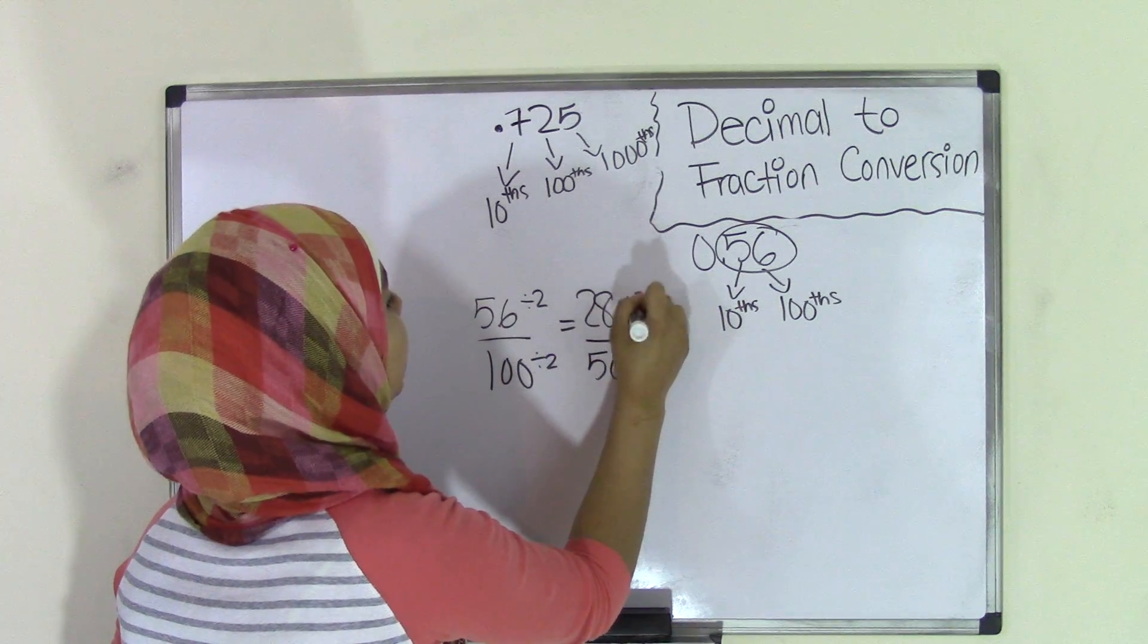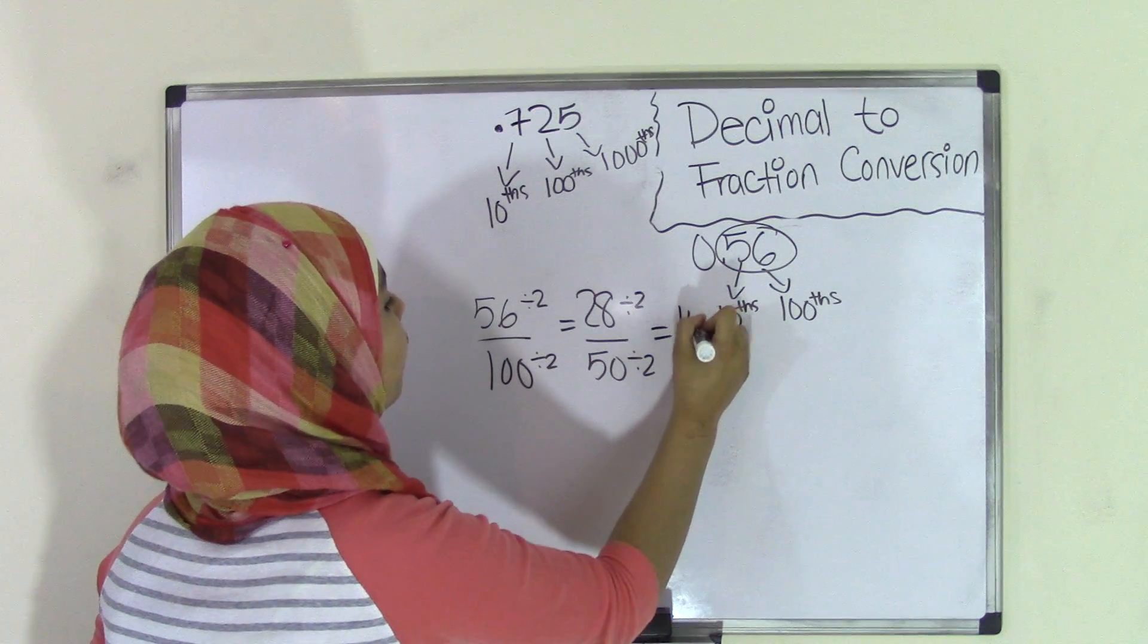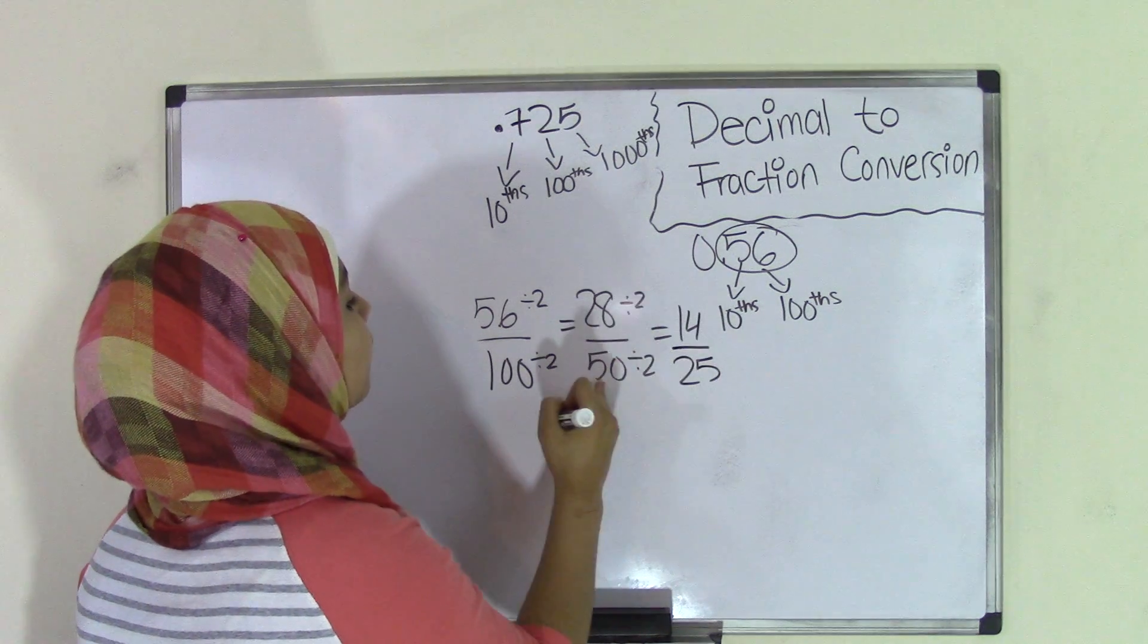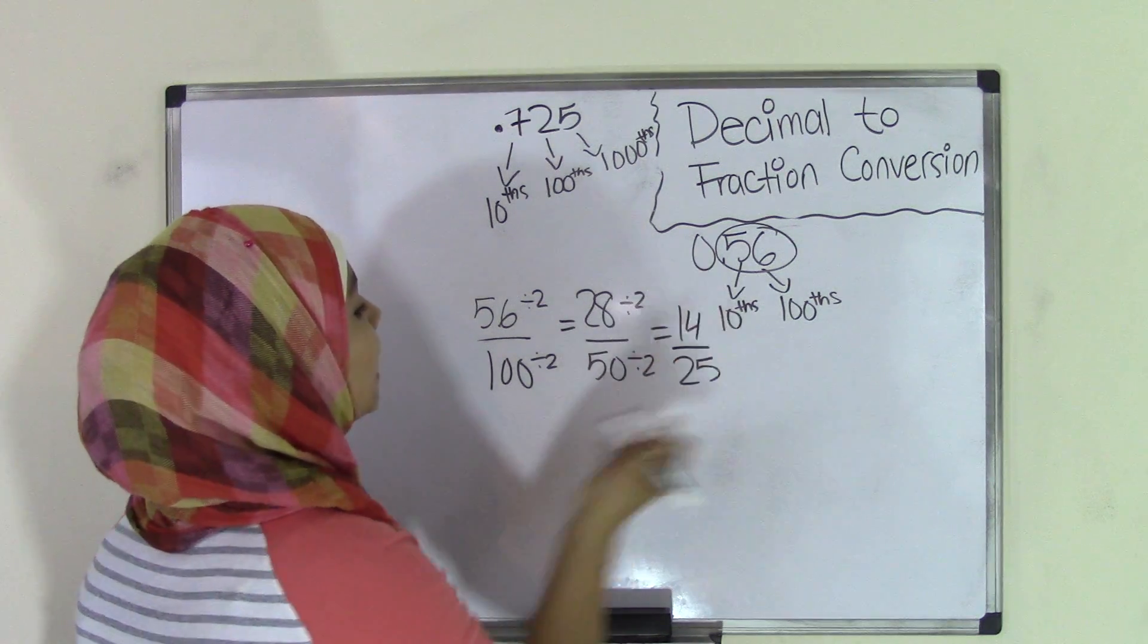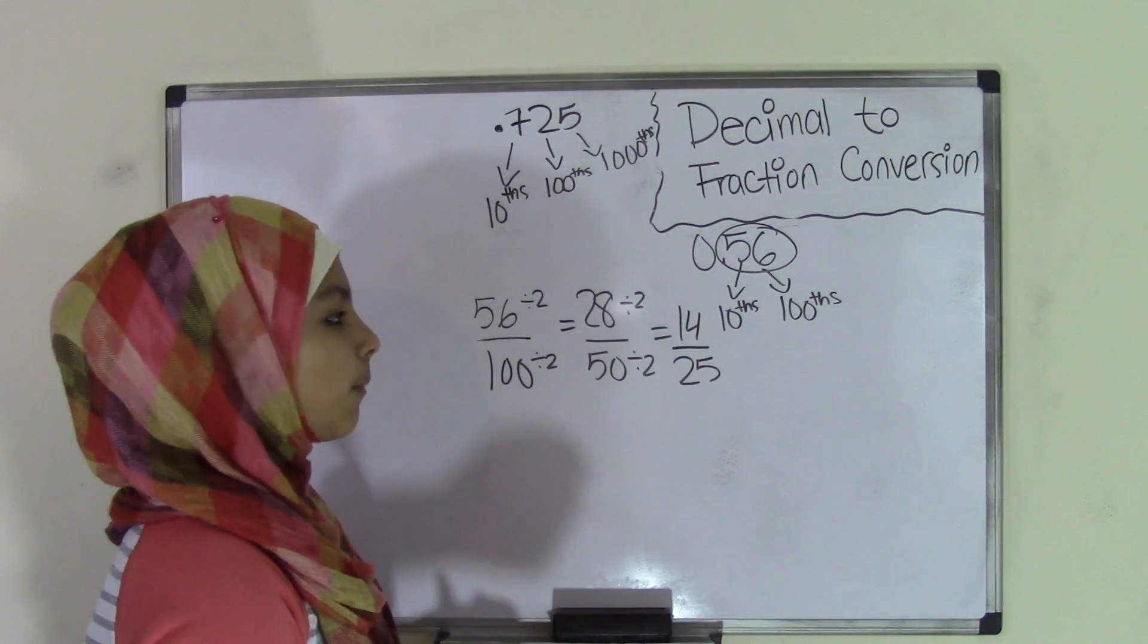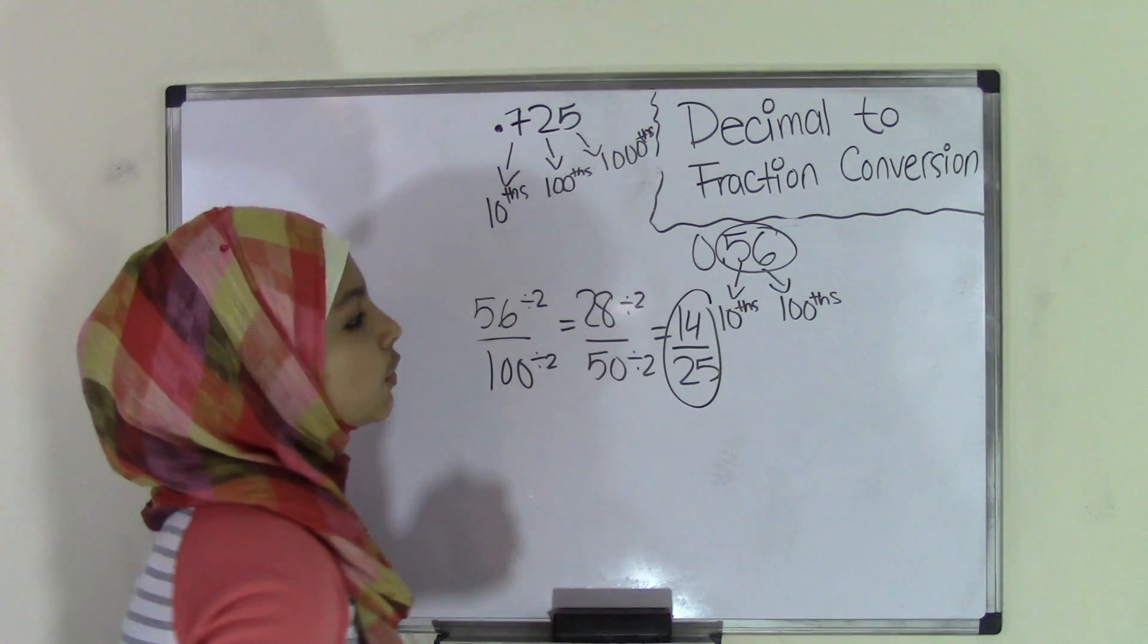And now if you can break this apart further. And so if you divide it by 2 again, we will get 14 over 25. Because 28 divided by 2 is 14 and 50 divided by 2 is 25. And that is the farthest we can break this into. That means the decimal number 0.56 converted into a fraction equals 14 over 25.